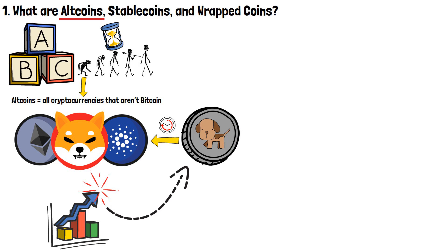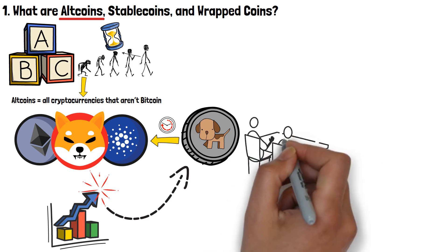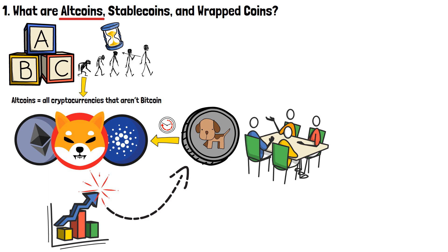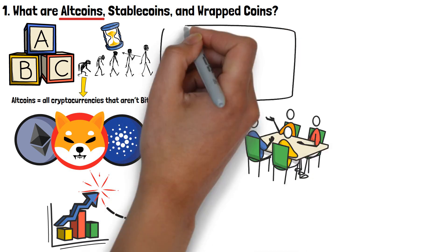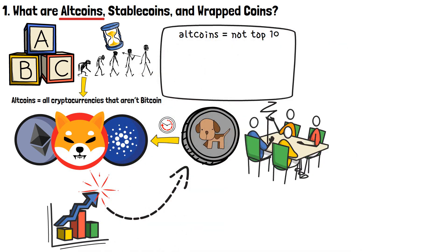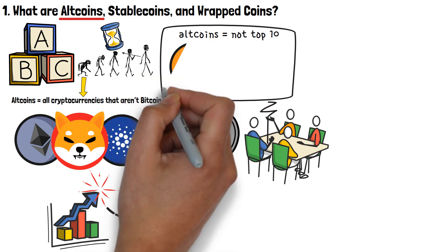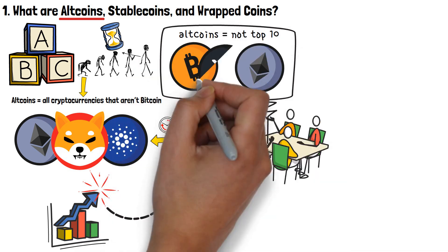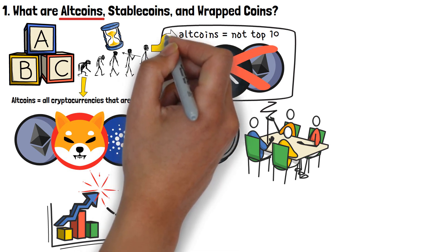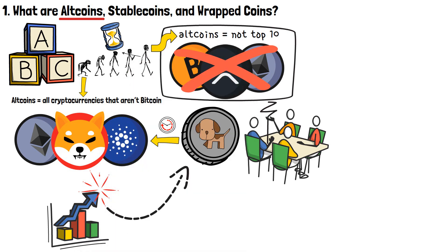This is why, at some point in time, people started using the term altcoins in reference to all of the different cryptocurrencies that are not the top 10 assets — Bitcoin, Ethereum, Ripple, and so on. So, in other words, if a coin or token isn't in the top 10 list, it's considered to be an altcoin.